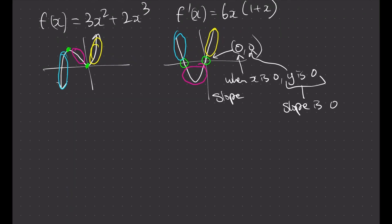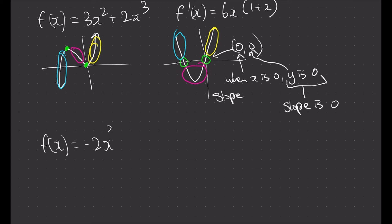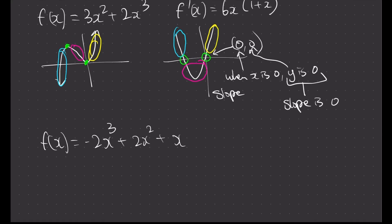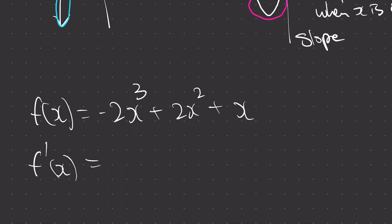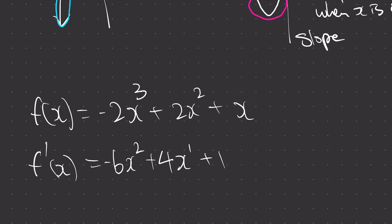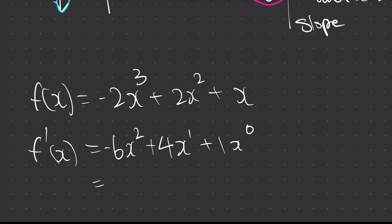Here's a practice problem: f(x) equals negative 2x cubed plus 2x squared plus x. Pause the video and try it yourself. The answer: since all terms are polynomial types, drag the powers down and subtract by 1. Drag the 3 down: negative 2 times 3 is negative 6, giving negative 6x squared. Drag the 2 down: 2 times 2 is 4, giving plus 4x. For the x term, there's an imaginary power of 1 — drag it down to get 1, and the power becomes 1 minus 1 equals 0, so x to the 0 is 1. Final answer: negative 6x squared plus 4x plus 1.